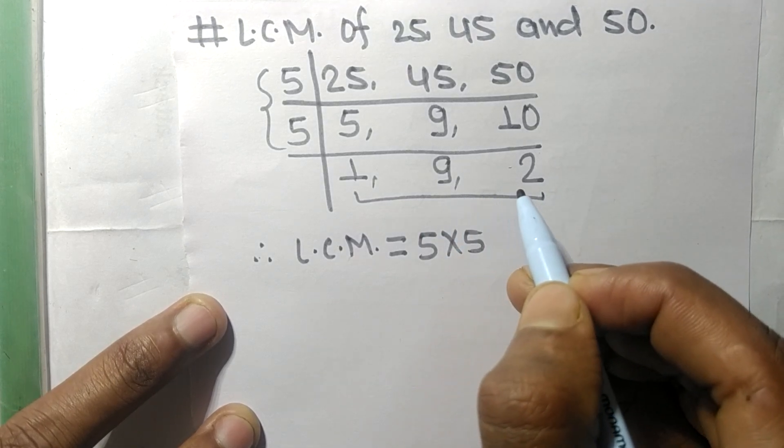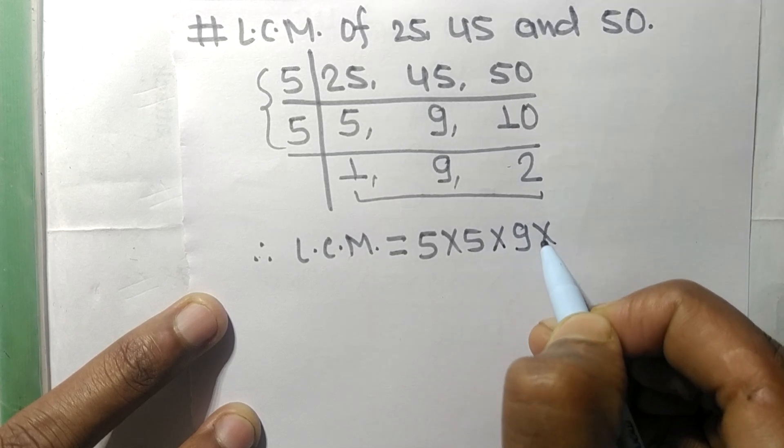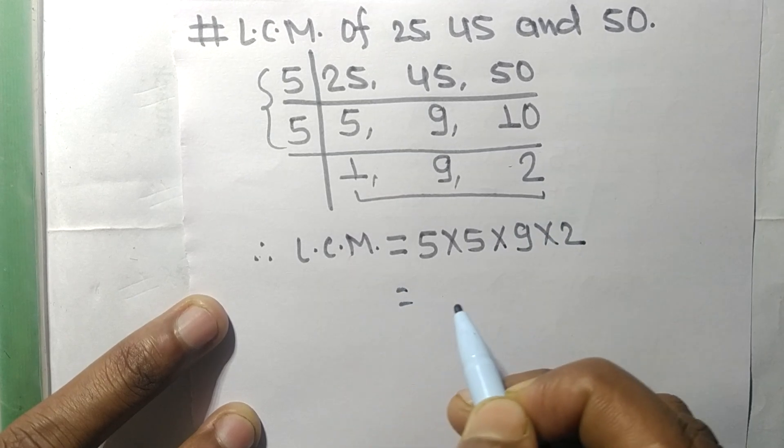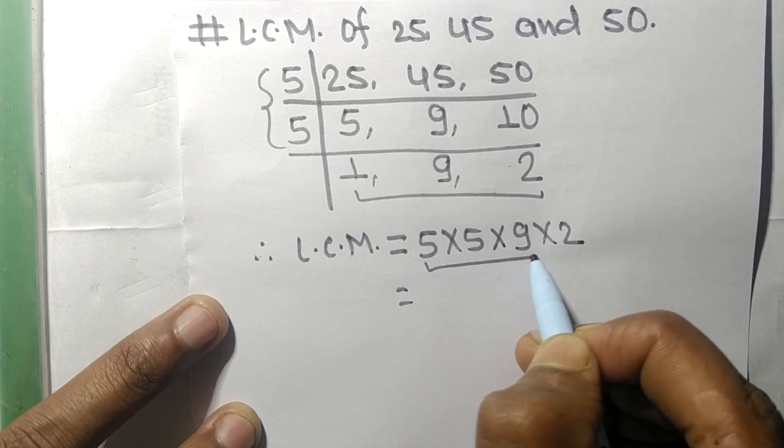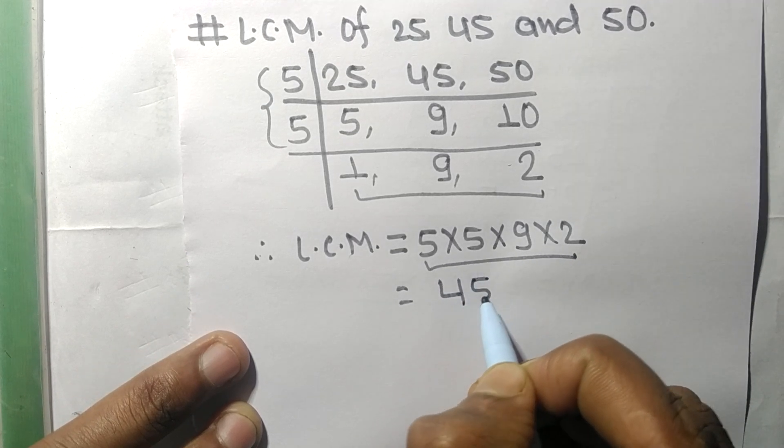So multiplied by 9 and 2, by multiplying all these numbers we get 450.